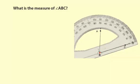Then you read up on the scale depending on whether your angle is acute or obtuse. In this case we have an acute angle, and we're starting from zero counting up: 10, 20, 30, 40, 50, 60, and so on.